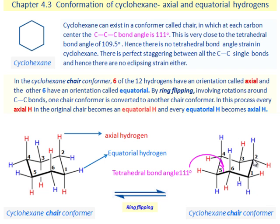There is perfect staggering between all the C-C single bonds and hence there are no eclipsing strain either. In cyclohexane chair conformer,